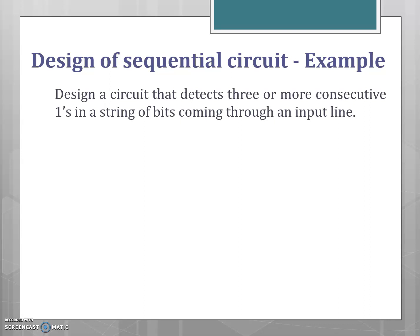Consider an example for the design of a sequential circuit that detects three or more consecutive ones. The first step is to draw the state diagram, which is a graphical representation of the behavior of the sequential circuit consisting of circles that represent states. We start with an initial state S0. For an input of 0, the circuit remains in the same state with output 0, since the output remains 0 until three or more consecutive ones are detected.